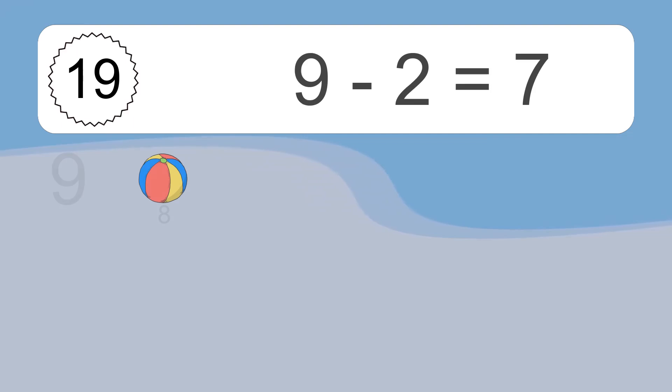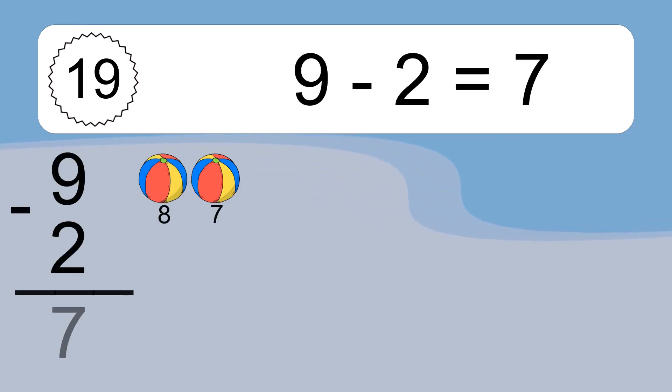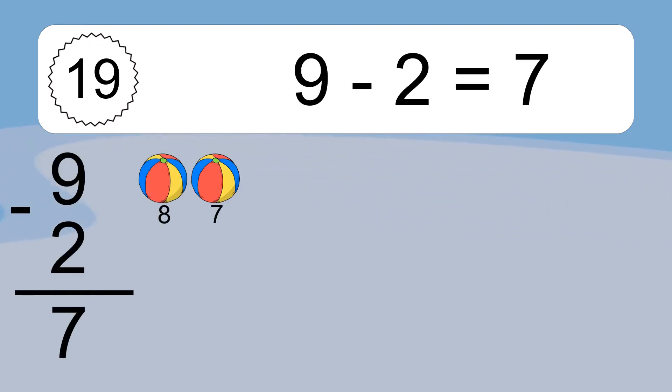9 minus 2 equals what? 9 minus 2 equals 7. Let's count it: 8, 7.